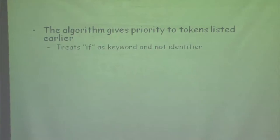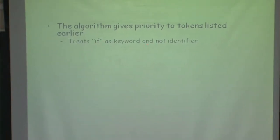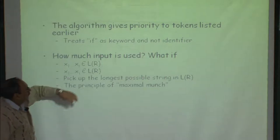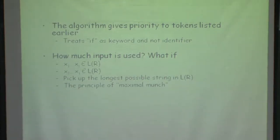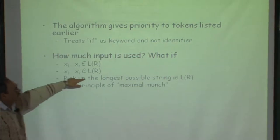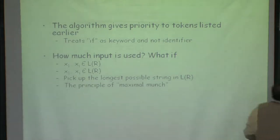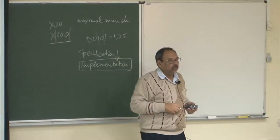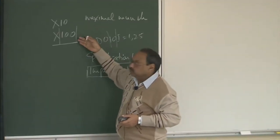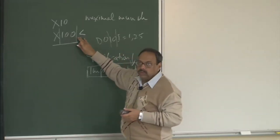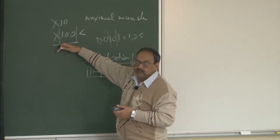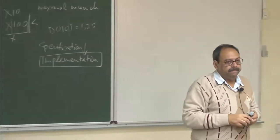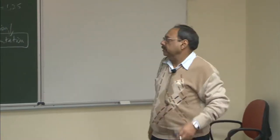The algorithm normally gives priority to tokens listed earlier — so 'if' is treated as a keyword and not an identifier. But how much input do I use? That is where we say I want to do a longest match. Normally all lexical analyzers say: pick up the longest possible string. When I have something like 'iff', I will not just stop at 'if' but go all the way until I cannot consume any more from this rule. Suppose after 'iff' I have a less-than sign — I cannot consume that in this token, so that is my word boundary. Regular expressions provide very concise notation, and a good algorithm requires a single pass.